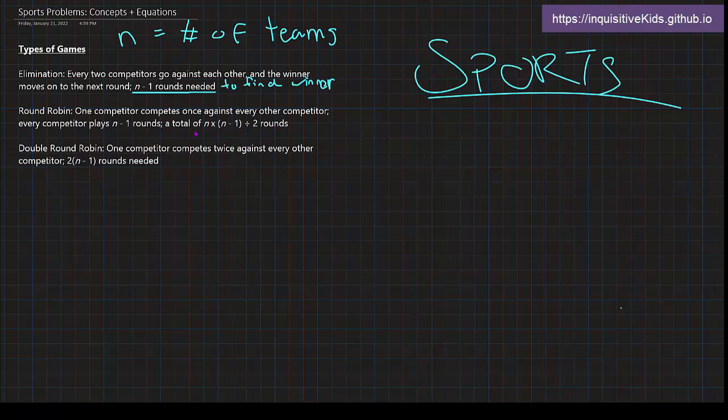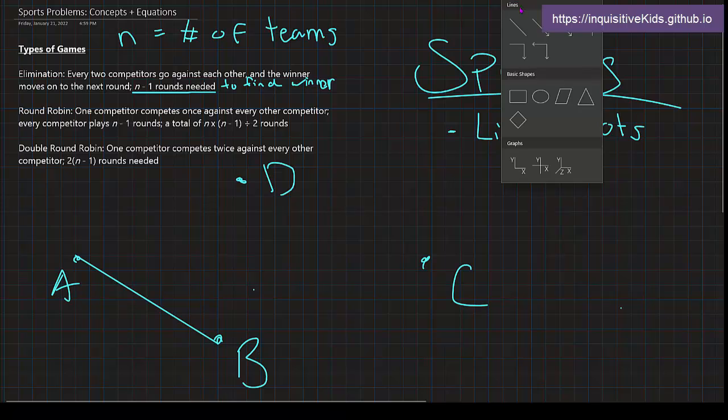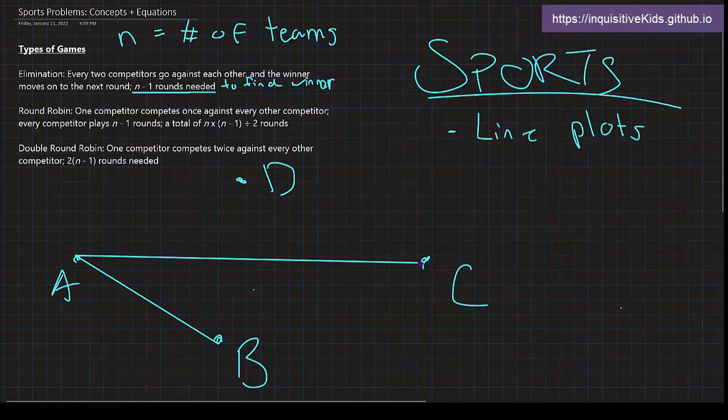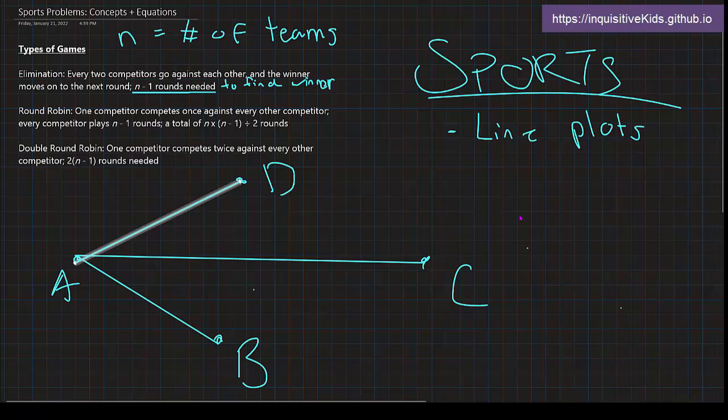Here's what I mean. If we have four teams—A, B, C, D—I'm going to draw them out in dots. Drawing line plots like this is something you should master throughout this series. Every time I draw a line, it means a team has competed. Team A is going to go against B, then against C, then against D.